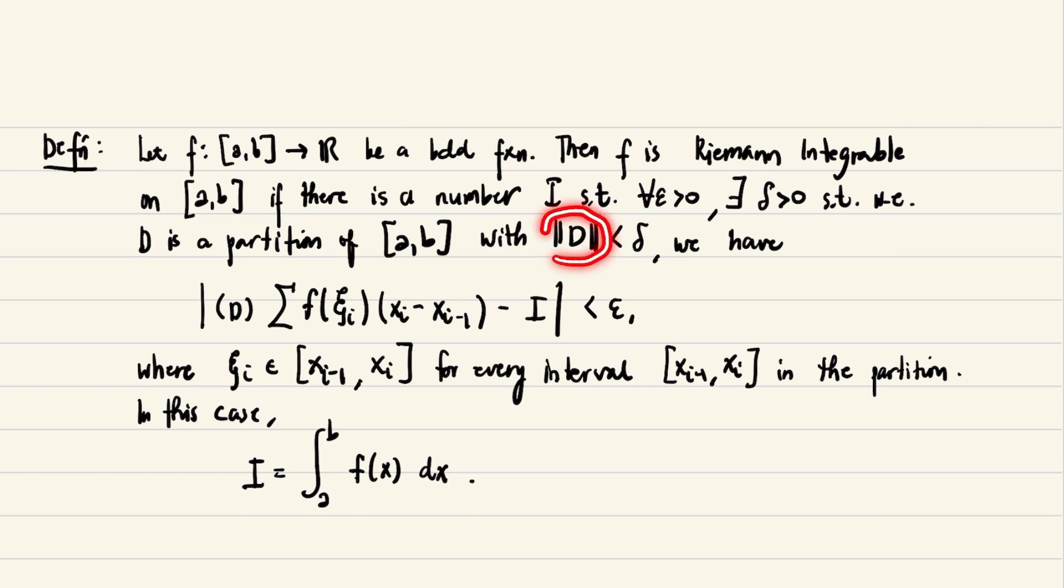Such that whenever D is a partition of the closed interval [a,b] with the norm |D| which is less than delta, we have this equation here. We call such I to be the integral of f(x) from a to b.